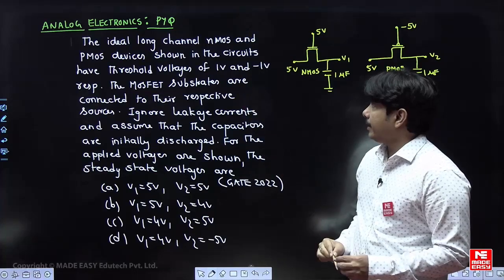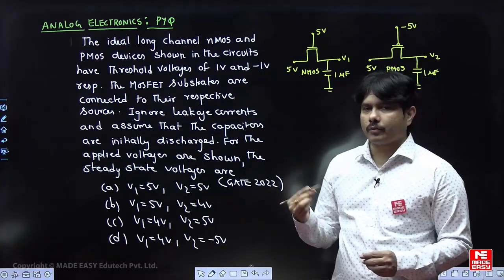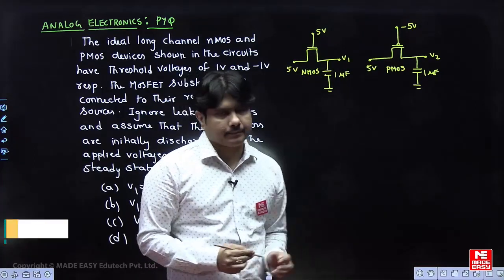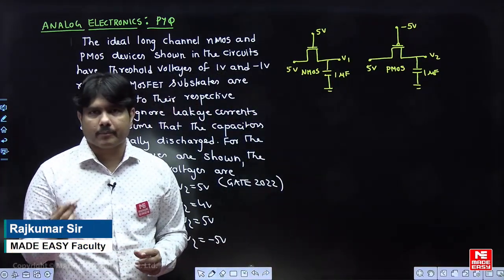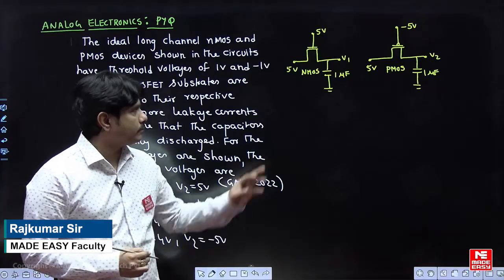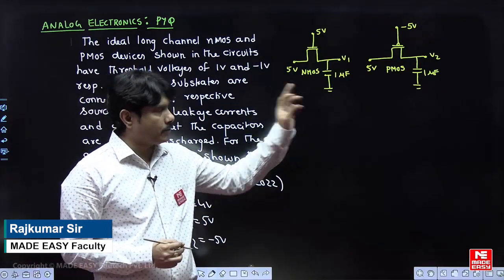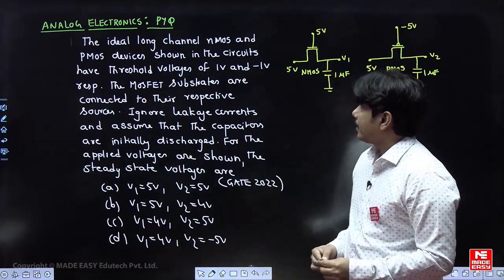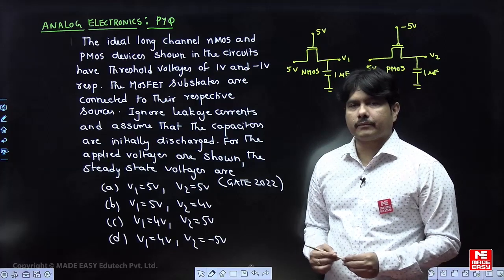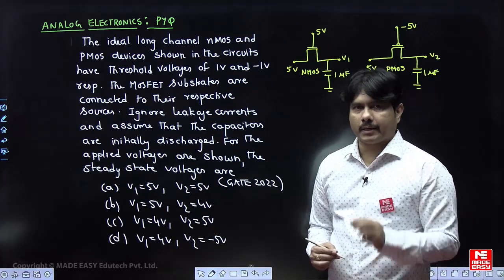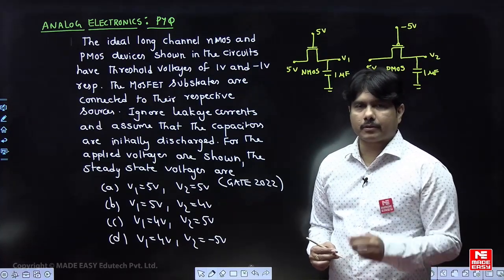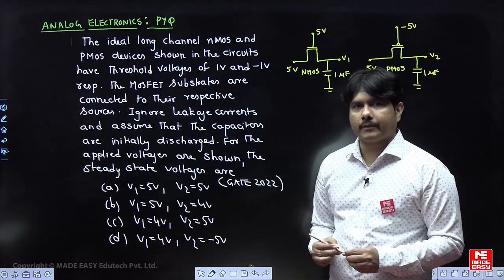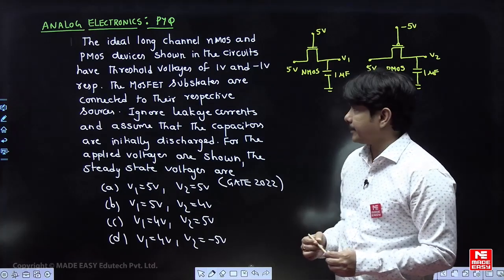The ideal long-channel NMOS and PMOS devices shown in the circuit — they have shown two MOSFETs side by side in the problem. One is NMOS and one is PMOS, both represented separately. The threshold voltages of the two MOSFETs are: for NMOS it is 1 volt, and for PMOS it is minus 1 volt.